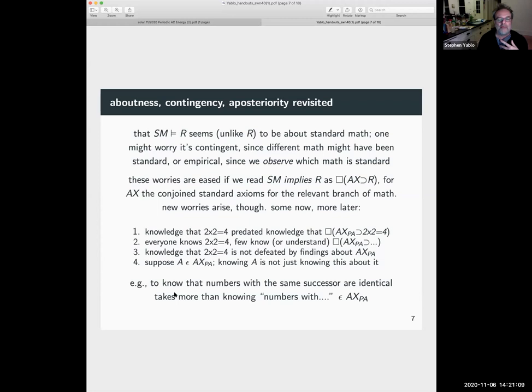But these worries are eased if we do what Hartree does, which is we read sm implies r as necessarily, this is again logical necessity, ax than r, where ax is just the conjoined standard axioms for the relevant branch of math. So yeah, Hartree is careful to limit himself in relevant context to finitely axiomatizable theories. So I'm not so careful, so I just realized I have something like the axioms of piano arithmetic. Well, of course it isn't a finitely axiomatized theory, it has a schema.